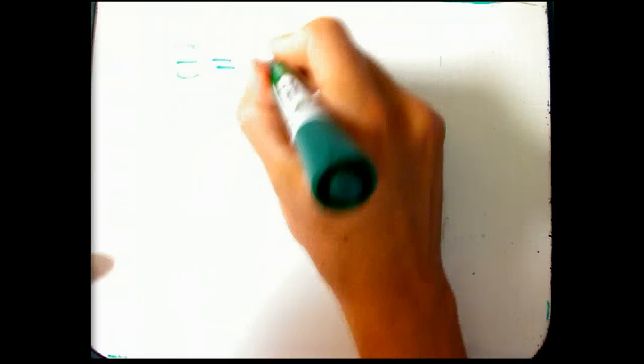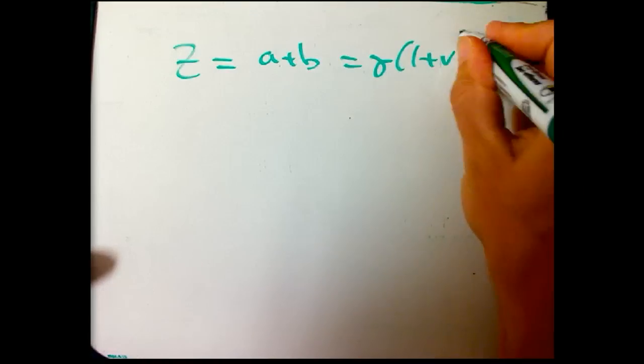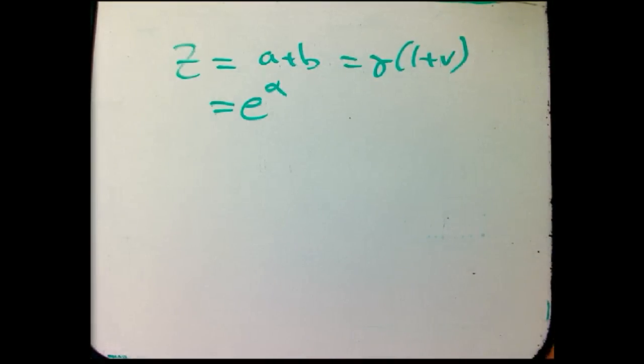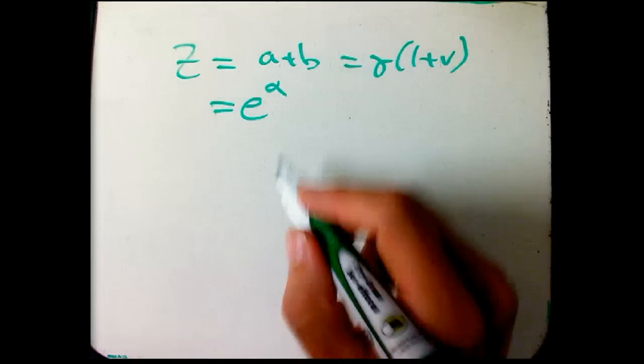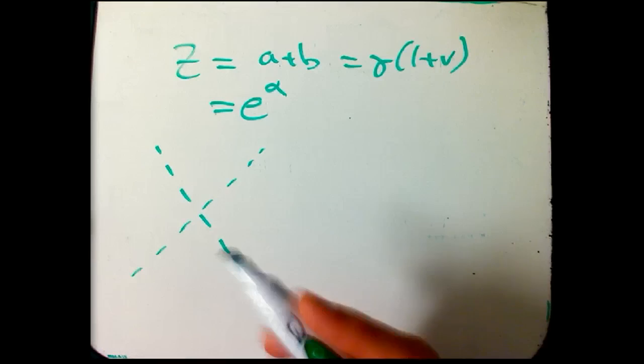Okay. So speaking of Z, the Z was A plus B, or gamma times the quantity 1 plus V, and it relates to the rapidity by the alpha by Z equals E to the alpha.